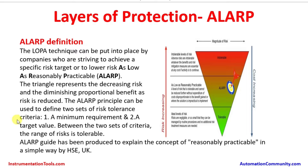Companies cannot spend millions of dollars building many safety layers indefinitely. Risk is inevitable, but companies need to make a balance between minimum requirements, safe requirements, and a target value to bring risk to a tolerable level. Between these two sets of criteria, the range of risk is tolerable.